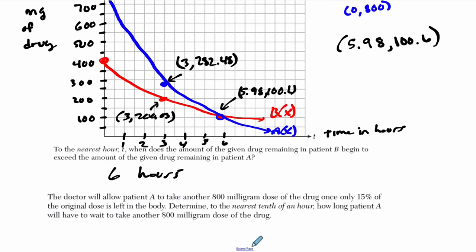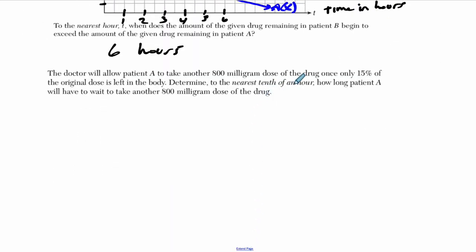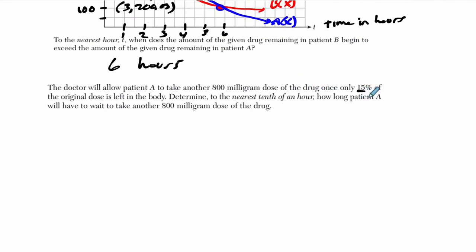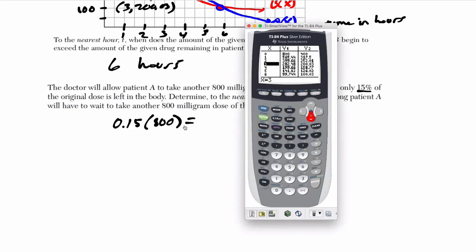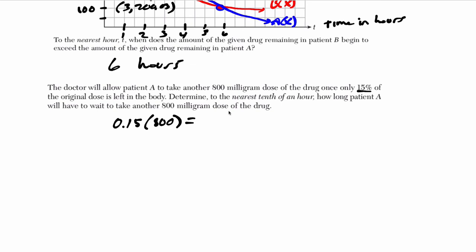The doctor will allow patient A to take another 800 milligram dose of the drug once only 15% is left in the body. Okay. So first of all, let's find that 15% of 800. It's 0.15 times 800. What does that equal? Okay. So quit out here. 0.15 times 800 is 120. So we want to know when do we reach 120 milligrams.